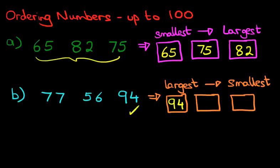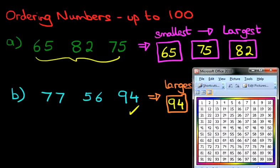So, we've done 94. We're left with 77 and 56. Again, let's have a look at the number grid. So, we've got 77 and 56.